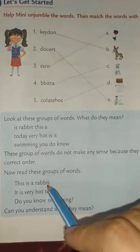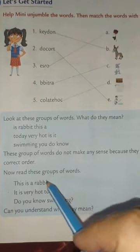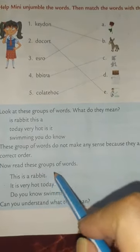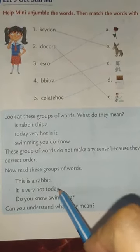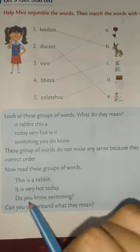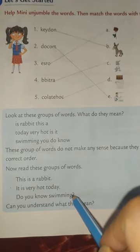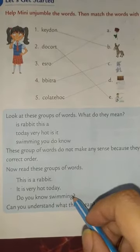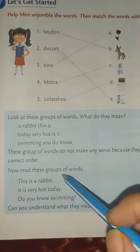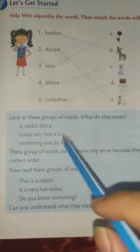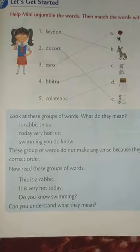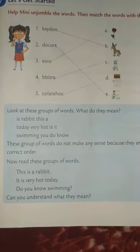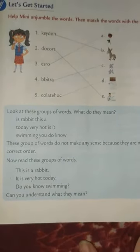This is a rabbit. It is a very hot day. Do you know swimming? So these sentences now have meaning. Can you understand what they mean? When words are arranged in the correct order, they form a proper sentence.